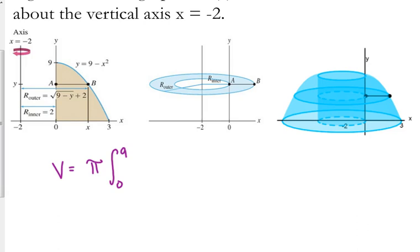Now our outer radius, I just showed you this a second ago, but you go from your axis of rotation to the furthest part of the region to figure it out. So every time we have this 2, this space of 2, and then the rest of it is determined by the x-value.